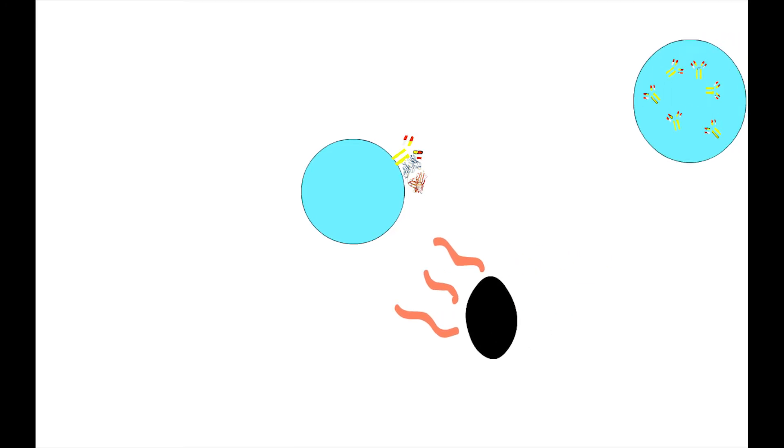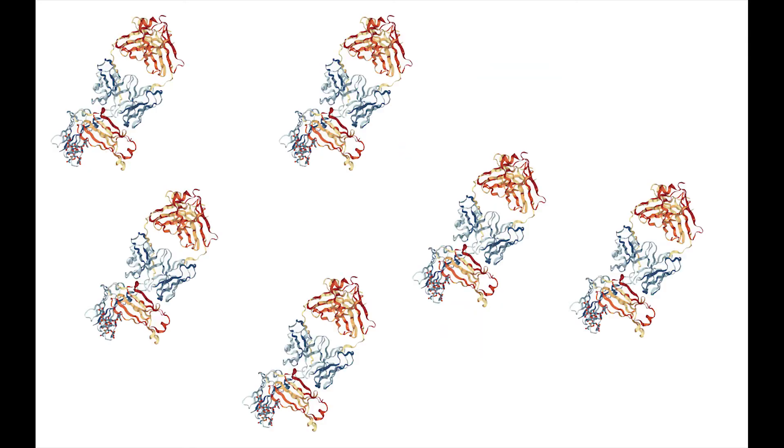RF develops in these germinal centers, where it's able to bind to IgG present on B cells. Once RF is attached, helper T cells send out chemical signals, which subsequently lead to the production of plasma cells, which replicate the IgG that was able to accept an RF molecule. IgG copies are released, and a ton of immune complexes then form in the joint space.